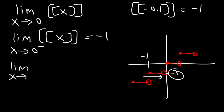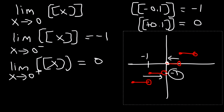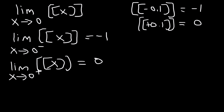For the right-sided limit as x approaches 0, the greatest integer of positive 0.1 is 0, since 0.1 is greater than 0. Using the graph, the y-value is 0 as x approaches 0 from the right. Because the left-sided limit (negative 1) and the right-sided limit (0) do not match, the limit does not exist.